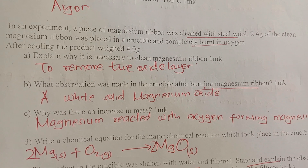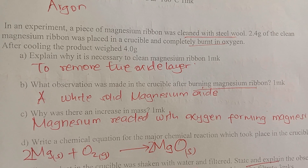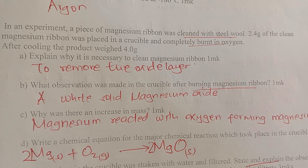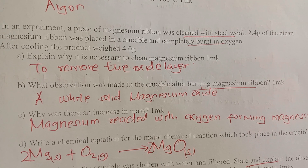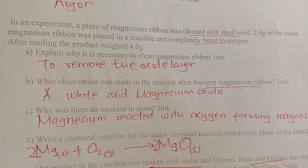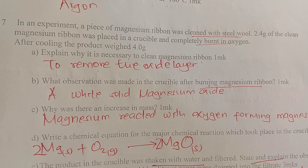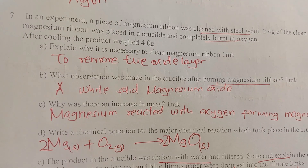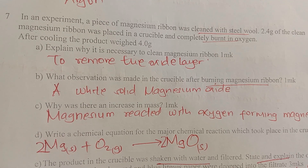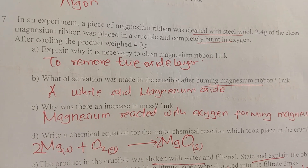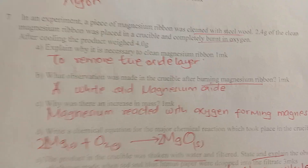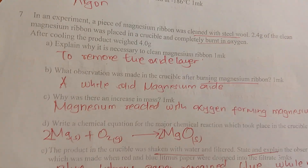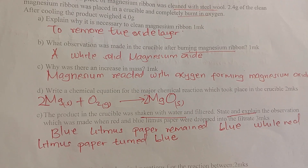In an experiment, a piece of magnesium ribbon was cleaned with steel wool. 2.4 grams of the clean magnesium ribbon was placed in a crucible and completely burnt in oxygen. After cooling, the product weighed about 4.0 grams. It is necessary to clean the magnesium ribbon in order to remove the oxide layer. After burning, a white solid — which is magnesium oxide — was observed in the crucible.